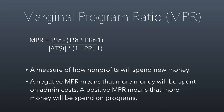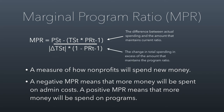There is a way to measure this — they call it the marginal program ratio, or NPR. The equation measures the difference between actual spending and the amount that maintains the program ratio versus the change in spending in excess of the amount that maintains the ratio. It creates an index number that is either positive or negative. A negative NPR means new money is spent disproportionately on administrative costs. A positive NPR means program costs get more of the new money relative to administrative costs.